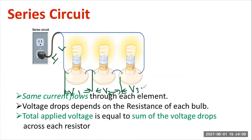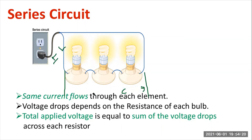The voltage is getting divided, so the total voltage will be V1 plus V2 plus V3. Therefore, we can say that the resistance will be high in case of a series connection.